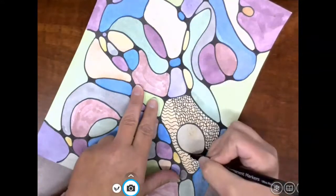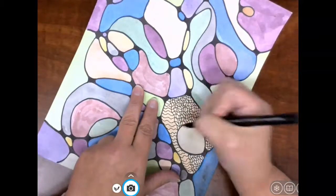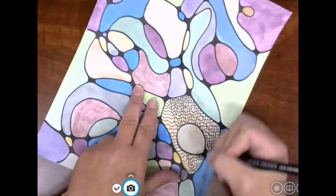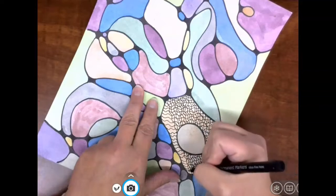All right, so as you can see here I have done smooth lines, they're looking good. My zentangle pattern is looking fancy and happy.